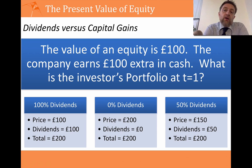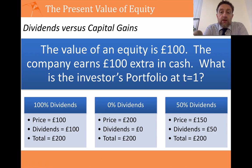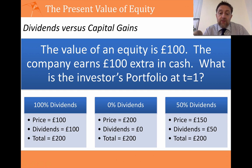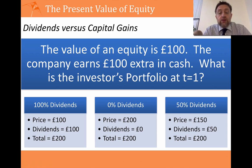In the second case, you earn £100 in cash and don't pay anything out in dividends, retaining the earnings in the company. The value of your portfolio is still £200, but the price doubles from £100 to £200 — that's your capital gain. In the third case, paying 50% out in dividends, you receive £50 in dividends and retain £50, so the company value goes up by £50, giving an overall portfolio of £200.